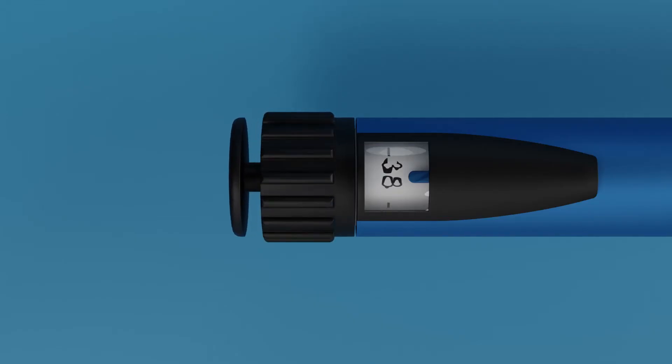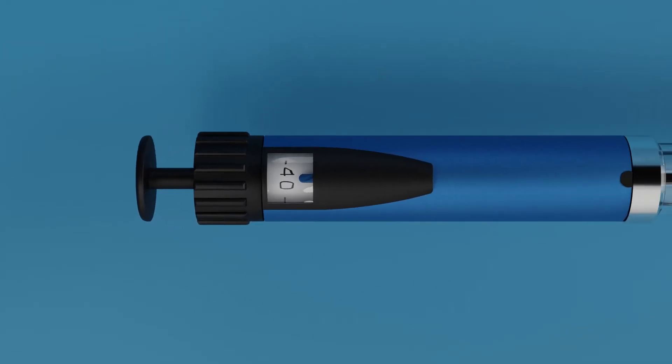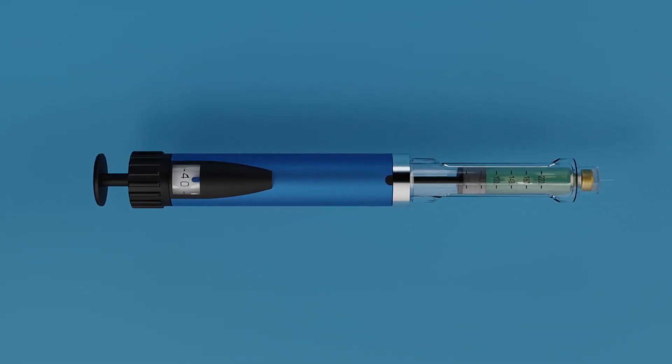Dial the required amount of Clotixa dose by rotating the dose dialer. The figure that appears in the dose dialer indicates the amount of Clotixa dialed by you. Like in this case, let us dial 40 mg.